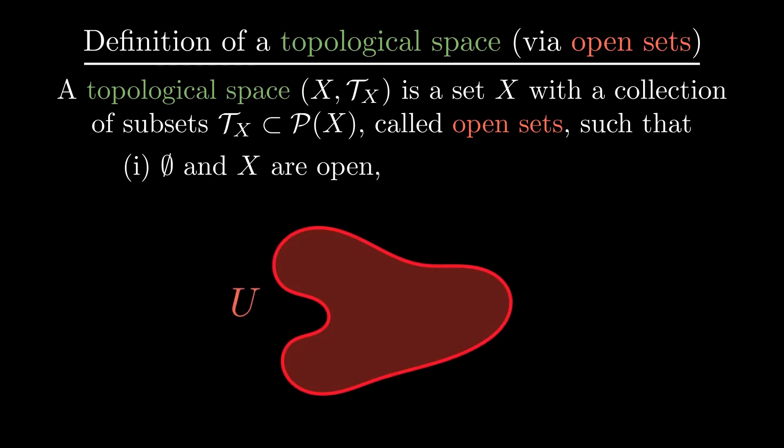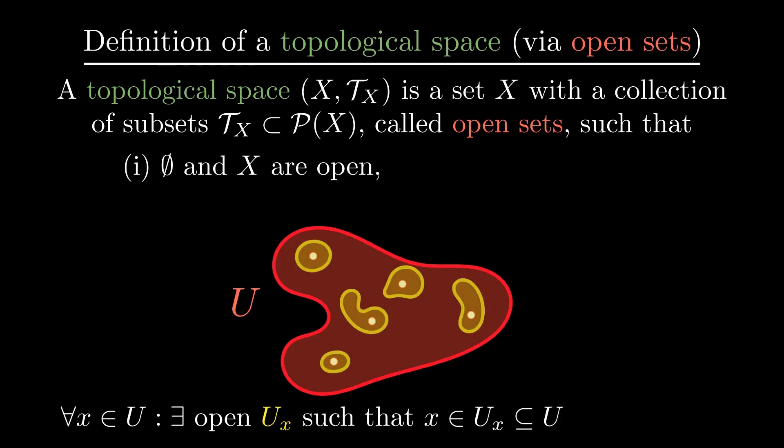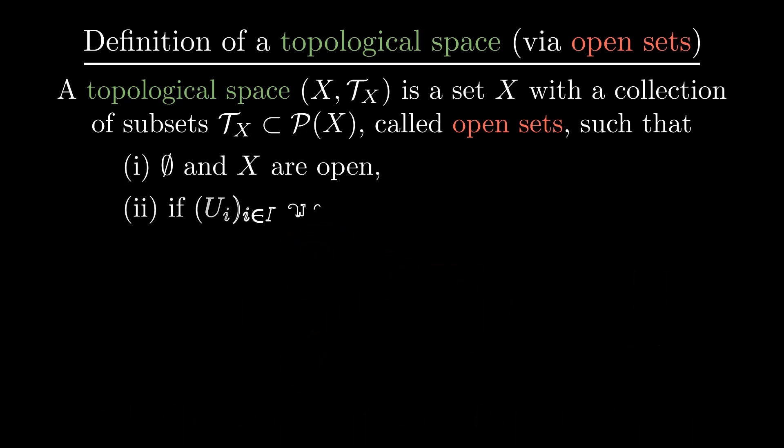Now take any set U where for every point we can find an open set which contains the point and is contained in U. Then by our previous definition, U would be a neighborhood of every point in U, so U should be open. U is the union of all the open sets, so it makes sense to require that arbitrary unions of open sets are open.